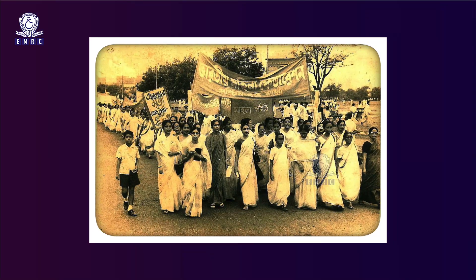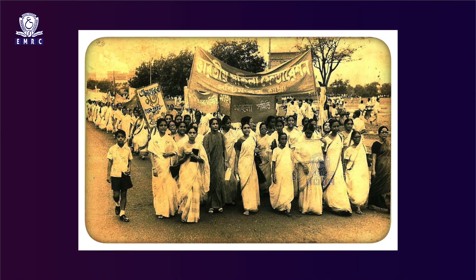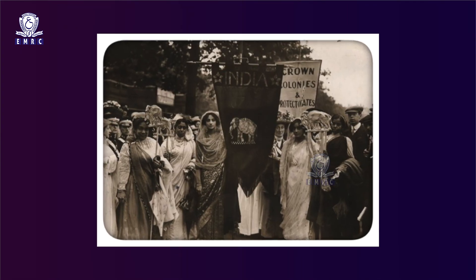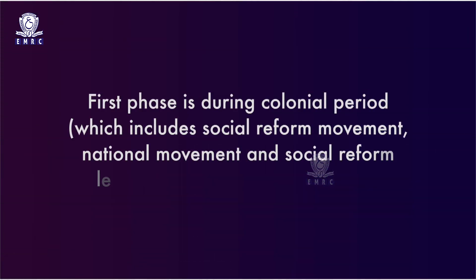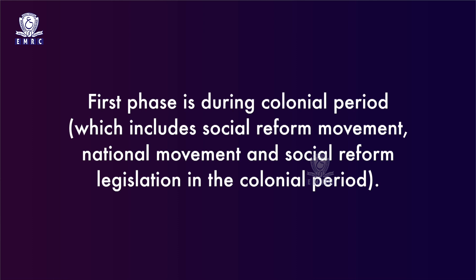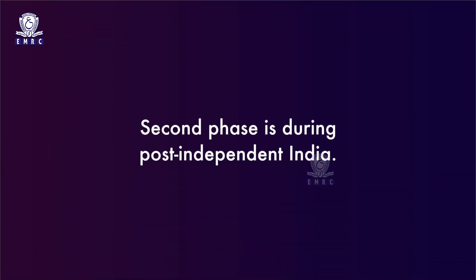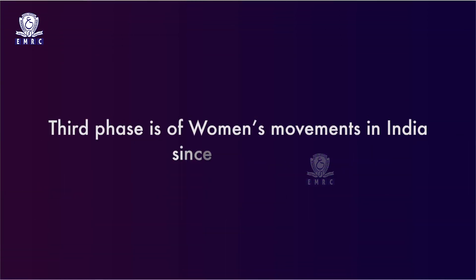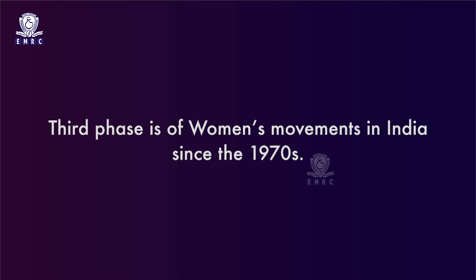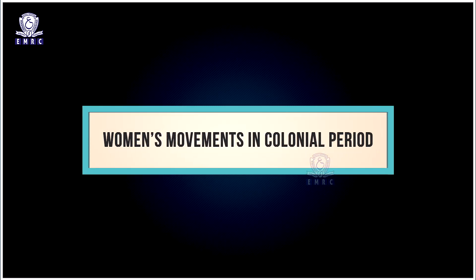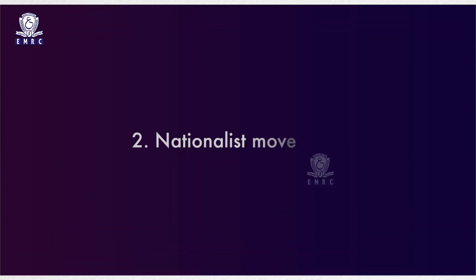Let us now discuss the distinct phases of women's movements in India. The beginning of women's movements is reflected through the social reform movement in the 19th century. The movement can be divided into three distinct phases: the first phase is during the colonial period, which includes the social reform movement, national movement, and social reform legislation; the second phase is during post-independent India; and the third phase is of women's movements in India since the 1970s. Women's movements in the colonial period are mainly of two different concerns: firstly, social reform movements, and secondly, the nationalist movements.